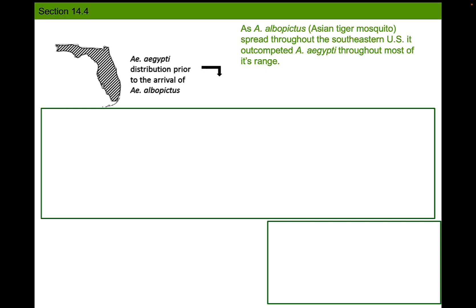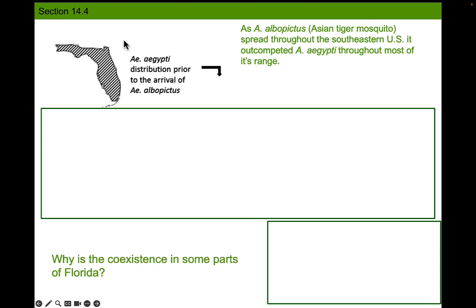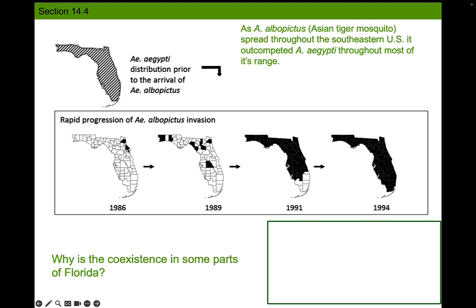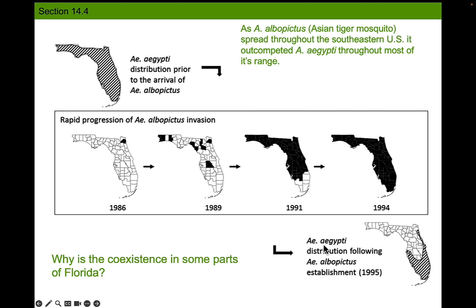Looking at just Florida: Aedes aegypti, the yellow fever mosquito, has been in Florida for quite a long time, but the Asian tiger mosquito didn't show up until the 1980s. Prior to its arrival, the yellow fever mosquito lived pretty much all of Florida. When the Asian tiger mosquito arrived, it spread county by county until it was ubiquitous throughout Florida. Afterward, the yellow fever mosquito got out-competed across a large northern range — that's competitive exclusion — but down south they do coexist.